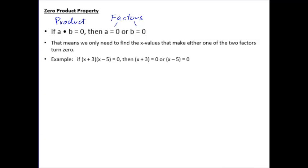That means if we have our quadratic equation in factored form, we only need to find the x values that make either one of the two factors equal to zero. For example, if x plus three times x minus five equals zero, then either x plus three equals zero or x minus five equals zero. Each number will turn one of the factors to zero, and then the entire product turns to zero.